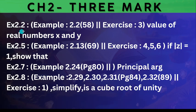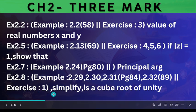Next exercise 2.2 third sum very important, value of real numbers x and y. Exercise 2.5 if |z| equals to 1, exercises 4, 5, 6. Example 2.13 page number 69. Exercise 2.7 principal argument based question. Next 2.8, exercise first sum, simplify cube root of unity. That is very easy sum 2.8, so it is chapter 2.